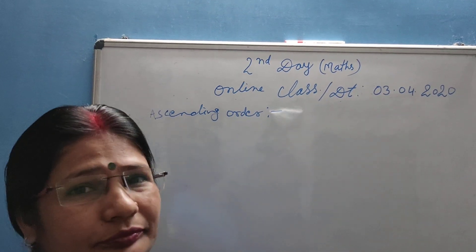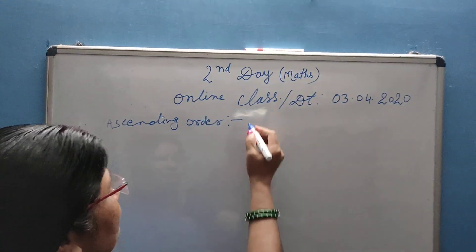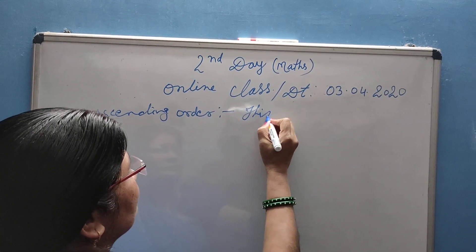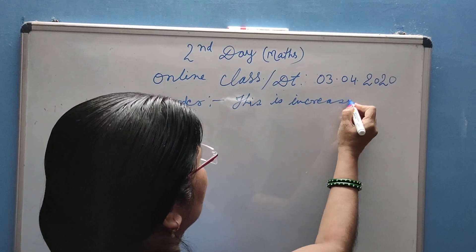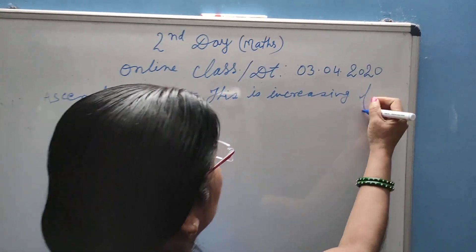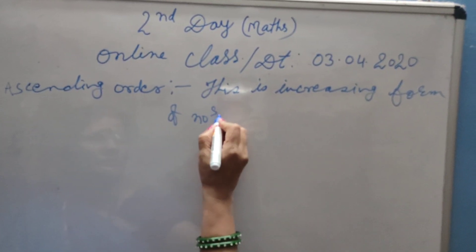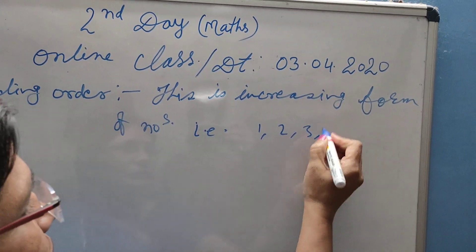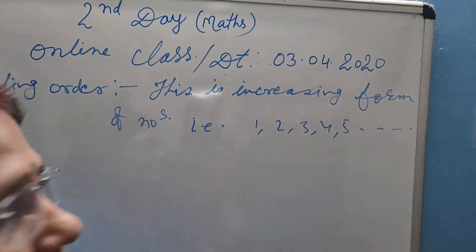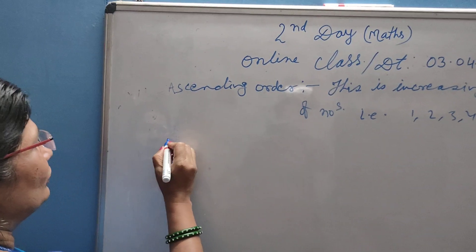Ascending order — this is the increasing form of numbers. That is 1, 2, 3, 4, 5, and so on. Now descending order.